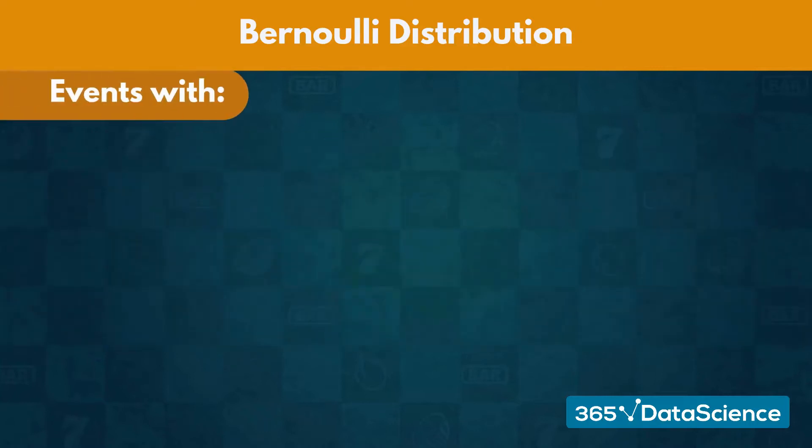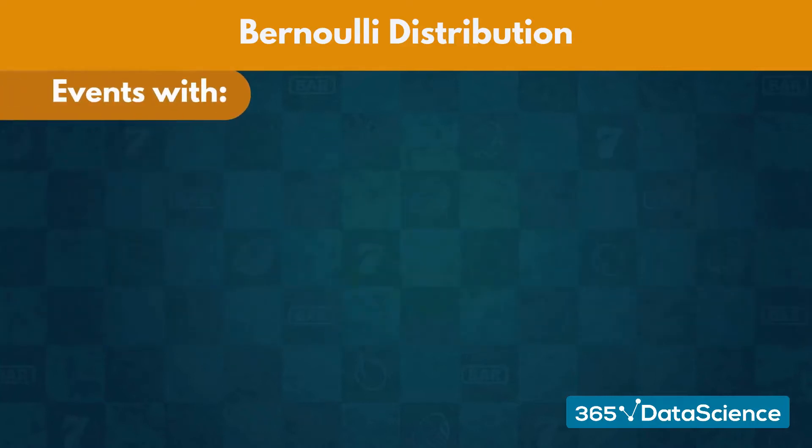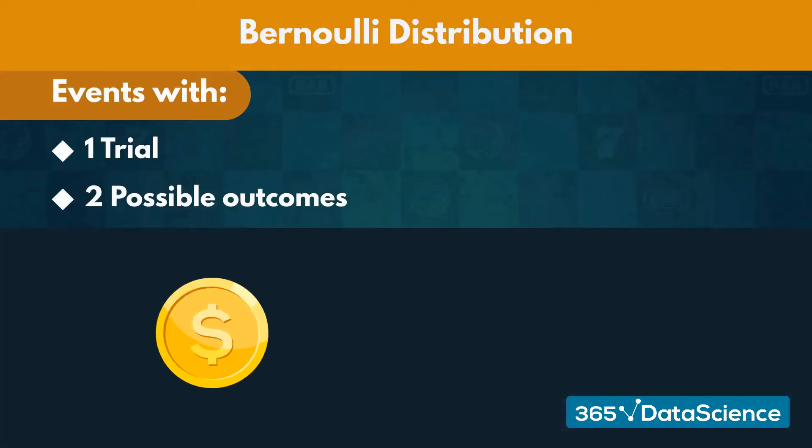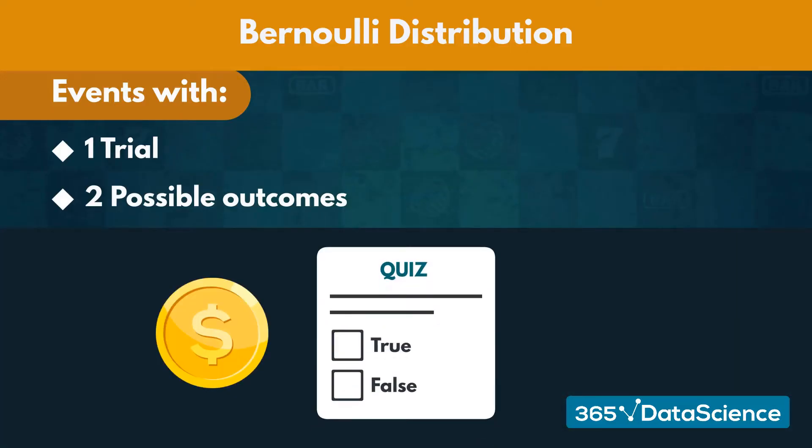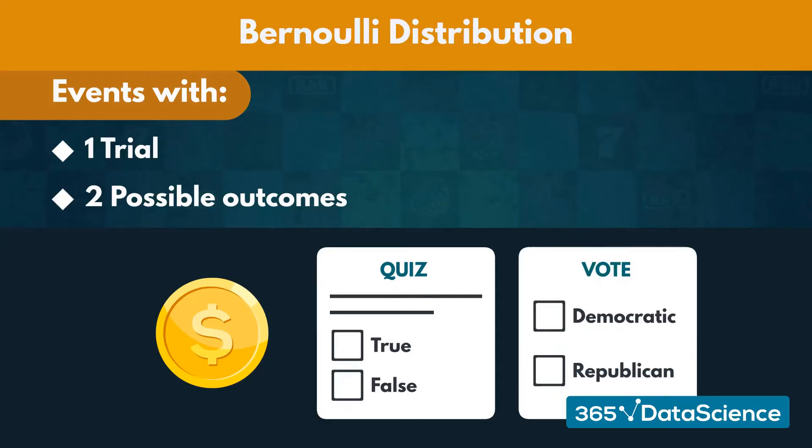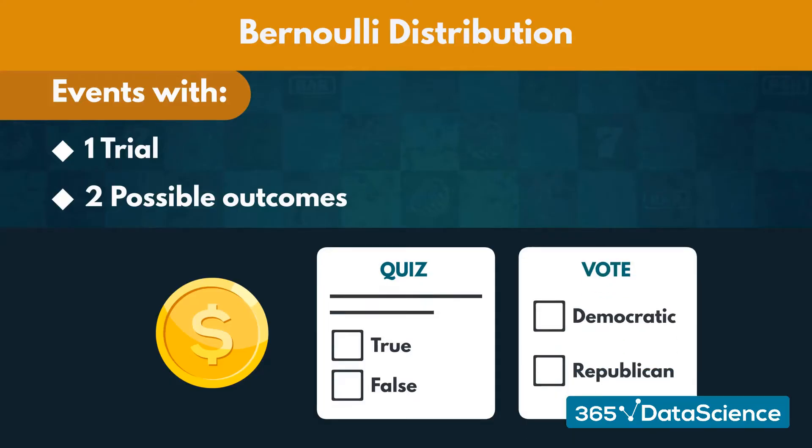We need to describe what types of events follow a Bernoulli distribution. Any event where we only have one trial and two possible outcomes follows such a distribution. These may include a coin flip, a single true or false quiz question, or deciding whether to vote for the Democratic or Republican parties in the US elections.